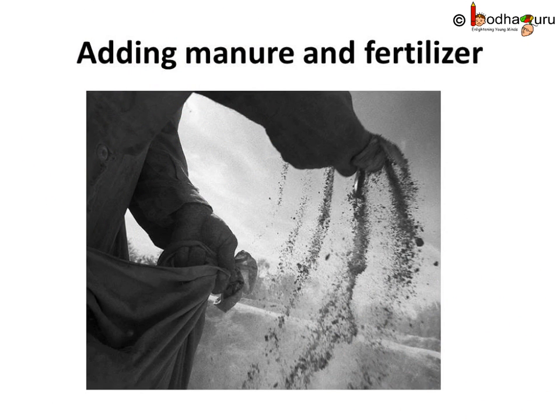After sowing the seeds, the next step is adding manure or fertilizer. The substances which are added to the soil in the form of nutrients for the healthy growth of plants are called manure and fertilizers. Continuously growing crops make the soil poorer in certain nutrients. Therefore, farmers need to add manure to the fields to replenish the soil with nutrients. This process is called manuring.